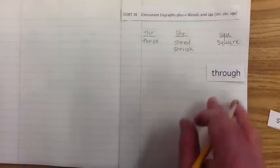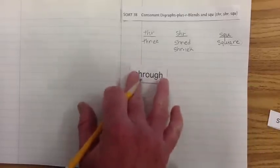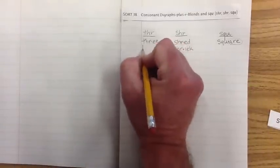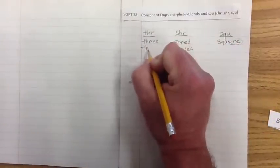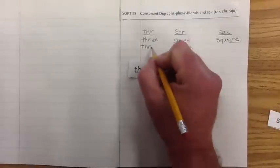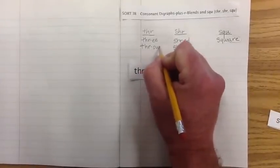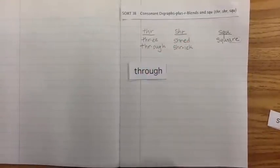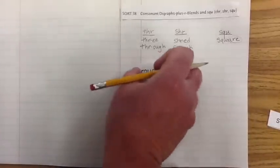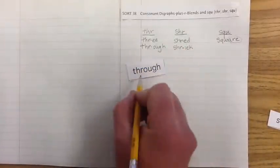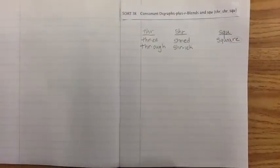Let's take a look at our next one. Again, it's not going to go under the SHR or the SQU. It's going to go under the THR. And it's through. There's our THR. And then there's our THRU. THRU. Over the river and through the woods to grandmother's house we go.